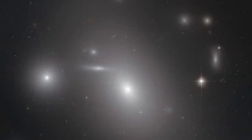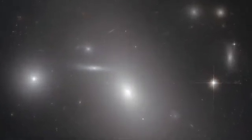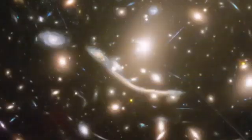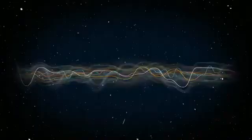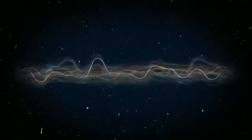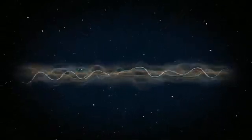This instability contributes to the pronounced pulsations observed in Betelgeuse, as the balance between gravity and radiation pressure becomes increasingly fragile. The star's outer layers swell and shrink, driven by these uneven energy releases, creating a spectacle visible even from 640 light-years away.